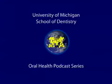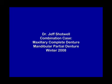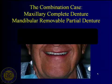Welcome to the University of Michigan Dentistry Podcast Series, promoting oral health care worldwide. This week we're talking about the combination case. What do we mean by combination case? Most typically, it means patients whose treatment requires a maxillary complete denture and a mandibular partial denture — someone who has a complete denture in one arch and a partial denture in the opposing arch.